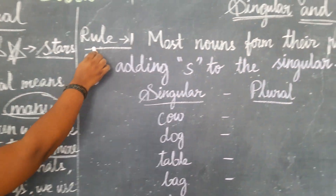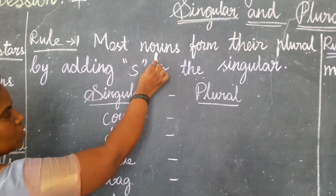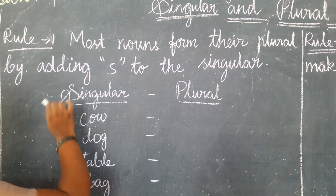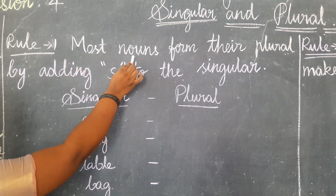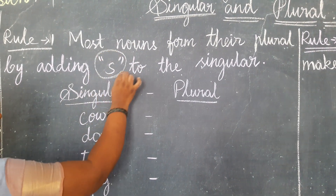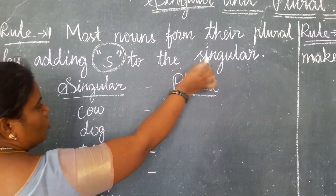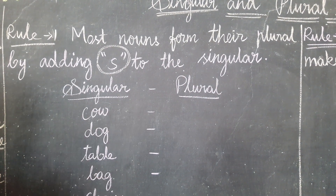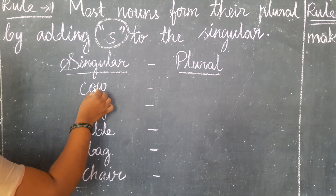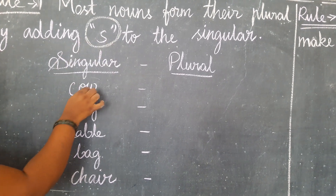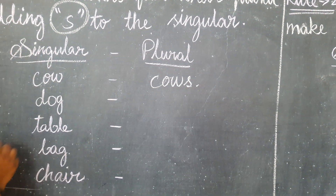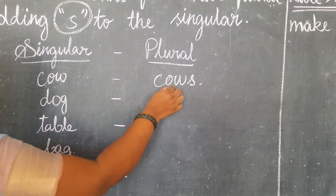Now we have some rules. Rule 1: Most nouns form the plural by adding S to the singular. I wrote some nouns. Cow — you must add S with the singular noun. Cow is singular, cows is plural. Dog, the answer is dogs.